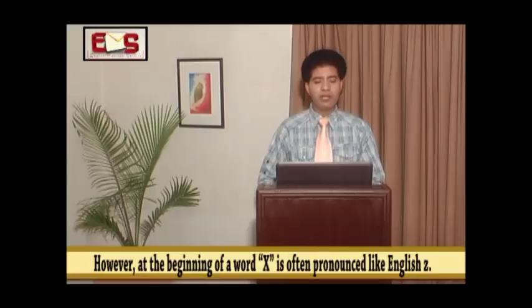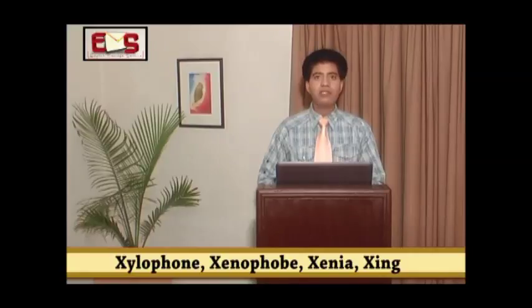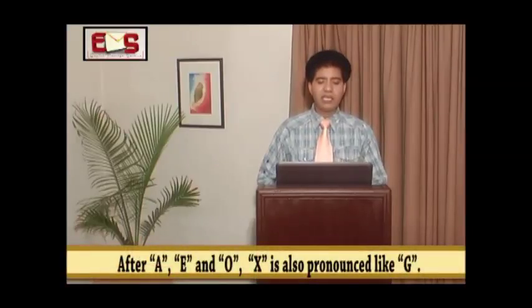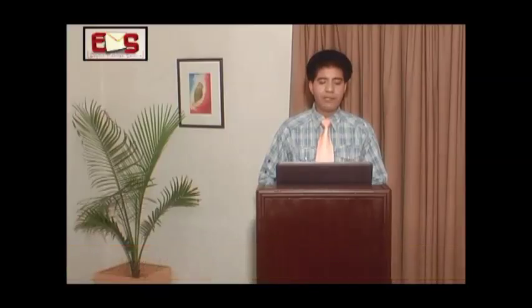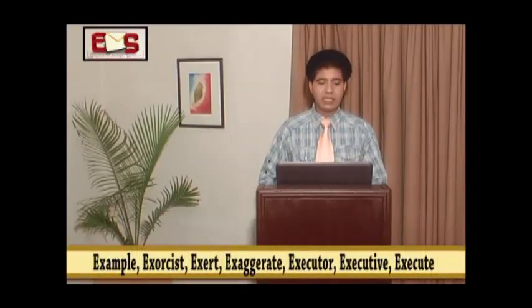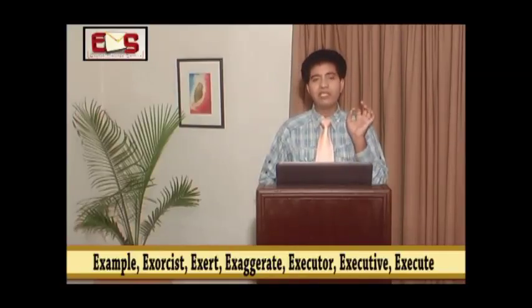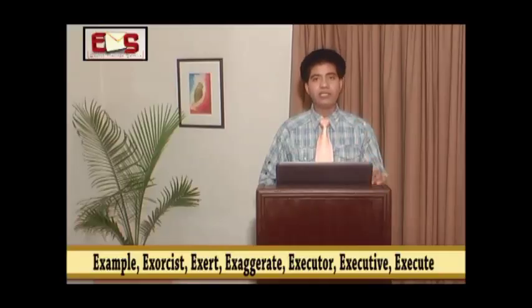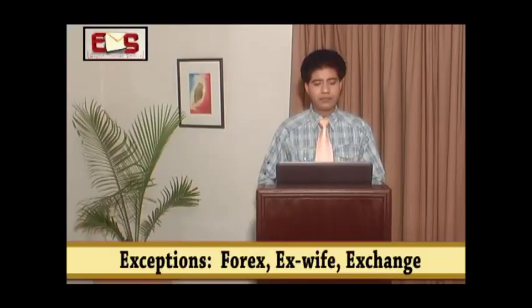However, at the beginning of a word, x is often pronounced like English z. So this is xylophone — you will not say 'xylophone,' this is xylophone. Xenophobe. Xenia. After a, e, o — x is also pronounced like g. Examples: exorcist, exert, exaggerate. I am pronouncing x as g. So this is exaggerate. Executor. Executive. Execute. There are few exceptions to this rule. That is for x. Ex-wife. Ex-change — here we pronounce it differently.